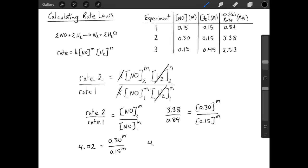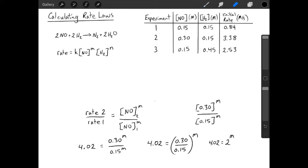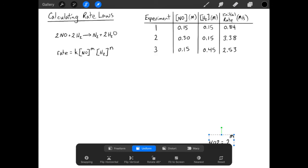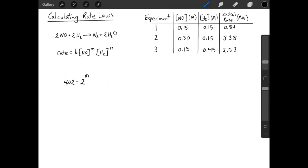When working with exponents and divisions, you can simplify this even further. In this case, our numbers work out pretty nicely. It looks like M is going to be 2. 2 to the power of 2 gets you 4, which is extremely close to 4.02.